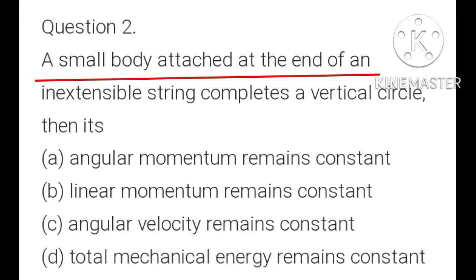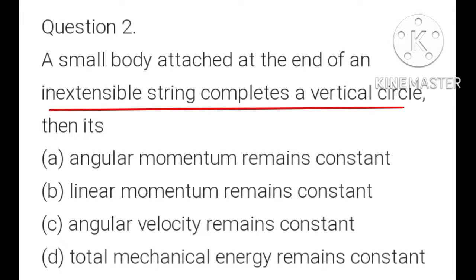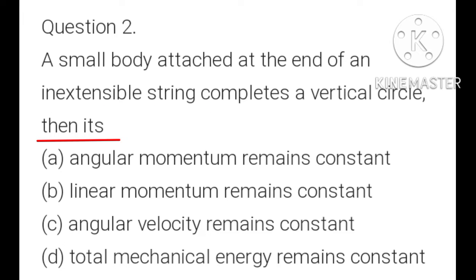Question 2: A small body attached at the end of an inextensible string completes a vertical circle. Then its: A) angular momentum remains constant, B) linear momentum remains constant, C) angular velocity remains constant, D) total mechanical energy remains constant. We know that when a body is attached to one end of a string and completes a vertical circle, its total mechanical energy remains constant. So D is the correct option.